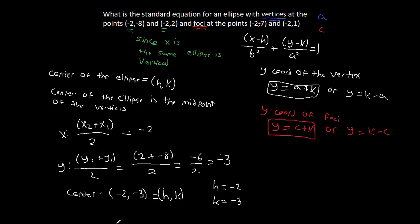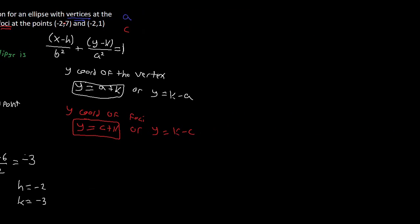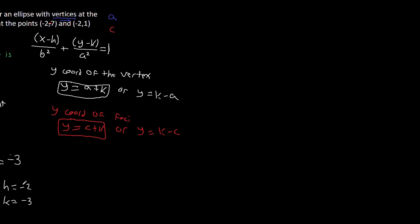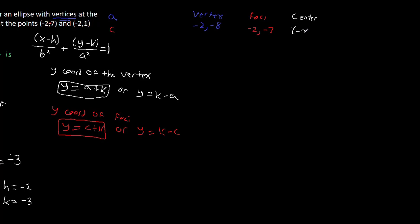If any of that was confusing, pause and rewatch — all we did was use the midpoint formula on the two vertex points to get the center. Now we have h and k. To summarize our known values: vertex point is (−2, −8), foci point is (−2, −7), and center is (−2, −3).